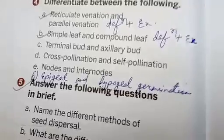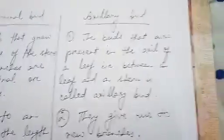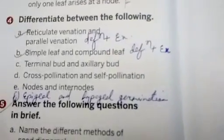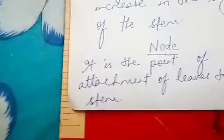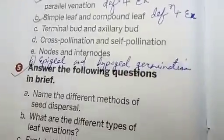Number B: simple and compound leaf — write the definition and one example. Terminal bud and axillary bud: this is not in your book, so I have written it down for you — please write it in your copy. Number C: cross-pollination and self-pollination — write the definitions. Fourth and fifth: nodes and internodes — I have written that down for you as well. An additional one: epigeal and hypogeal germination — write the definitions and one example each.